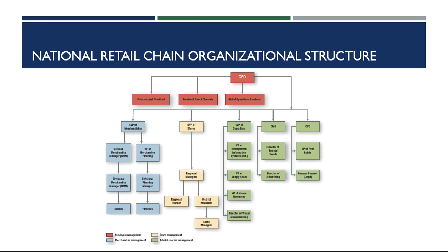In contrast, a national retail chain has a much larger organizational structure with many more people involved — a vice president of stores, regional managers, regional planners, and individual store managers all contributing to decisions across many locations. This concludes the first part of Chapter 9, where we've covered performance measures and organizational structure. In the next lecture, we'll talk about more strategic issues that human resource professionals have to manage.